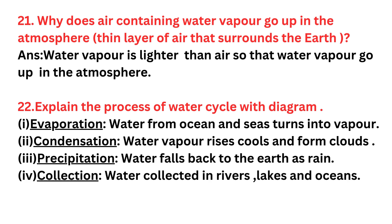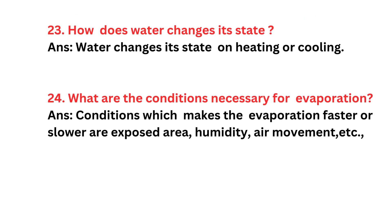Extra Question 22: Explain the process of the water cycle with a diagram. There are four processes: first, evaporation — water from the ocean and sea is turned into vapor. Second, condensation — water vapor rises, cools, and forms clouds. Third, precipitation — water falls back to the earth as rain. Fourth, collection — water is collected in rivers, lakes, and oceans.